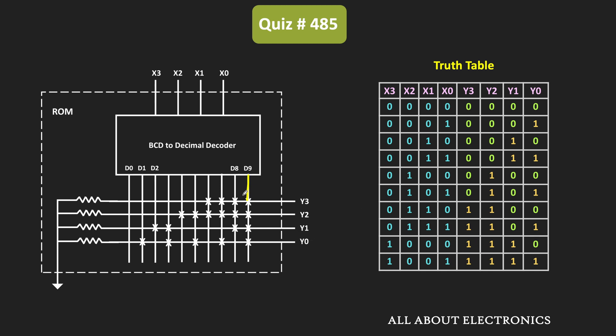When D0 output is high, then all outputs Y3, Y2, Y1, and Y0 will remain 0. In this way, depending on the interconnection, the 1s and 0s are stored in each word. This is the truth table of this given ROM.